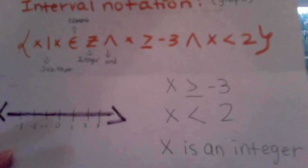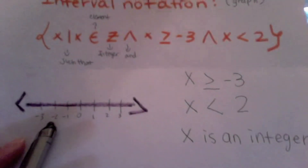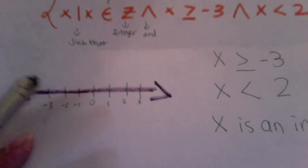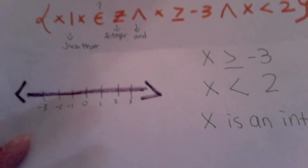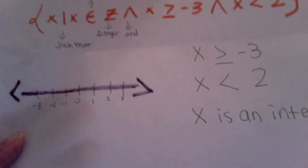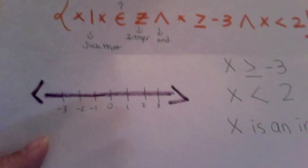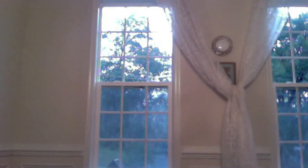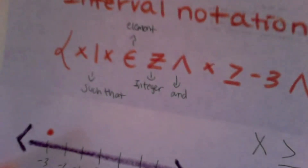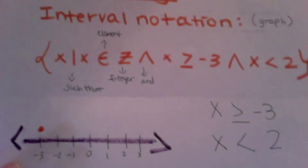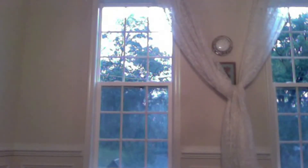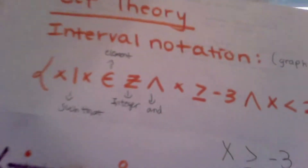If we were to put this on the number line, we would put little marks: 0, 1, 2, 3, and then negative 1, negative 2, negative 3. The first thing we look at is X is greater than or equal to negative 3. When we graph greater than or equal to, we draw a filled-in circle. So we fill in a circle right above negative 3, and then X is less than 2, so we have a not-filled-in circle right there.